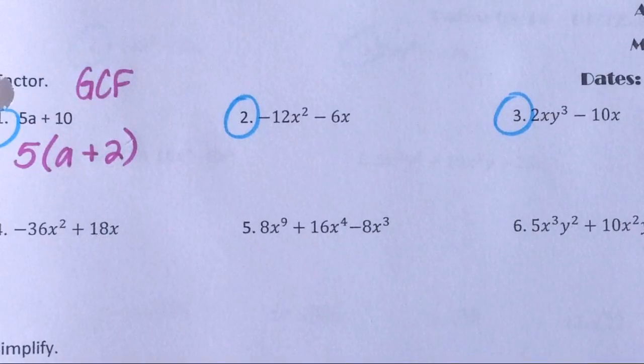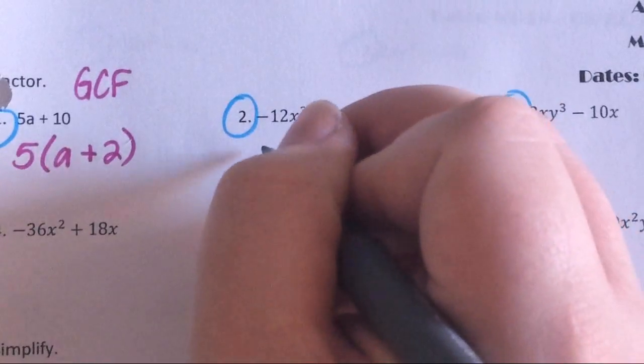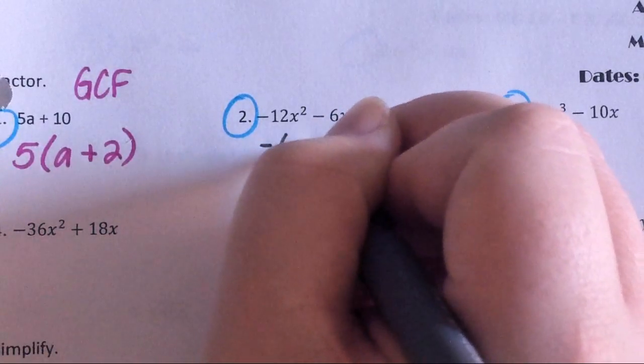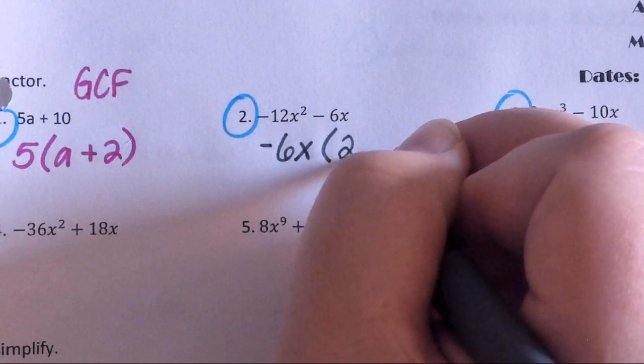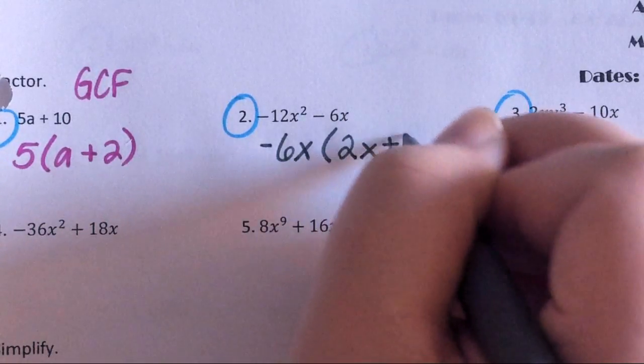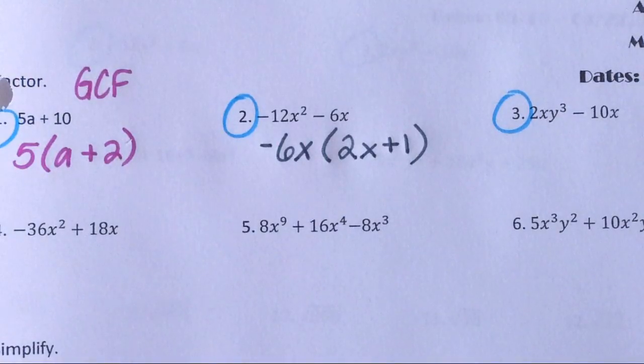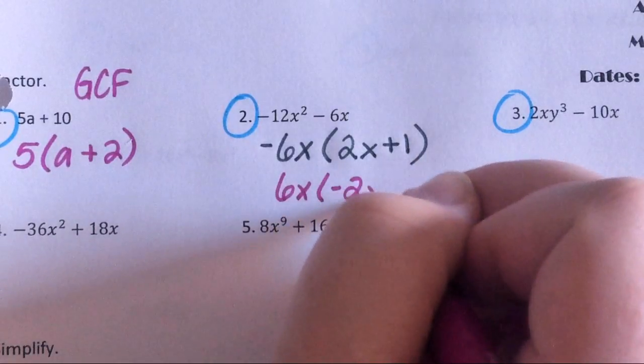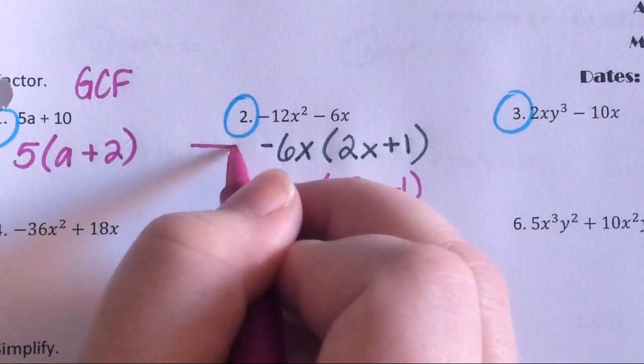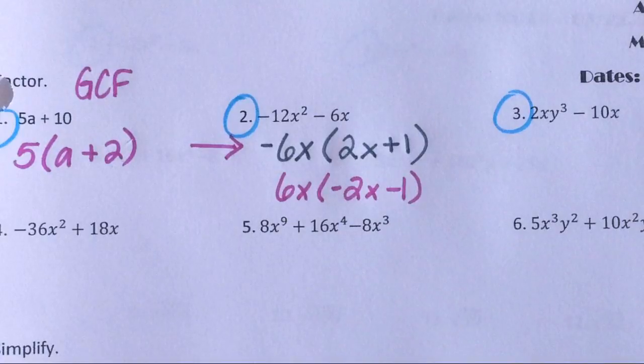Number two. Negative six X. We could pull out a negative six X and we would be left with two X plus one. That is correct. And I like that because not everybody's positive. Or maybe you just factored out a six X. You would have been left with a negative two X minus one. I agree with Arturo. I think I would have done the top one. But just in case you did the bottom one that's listed as well. Arturo, your group can have a point.